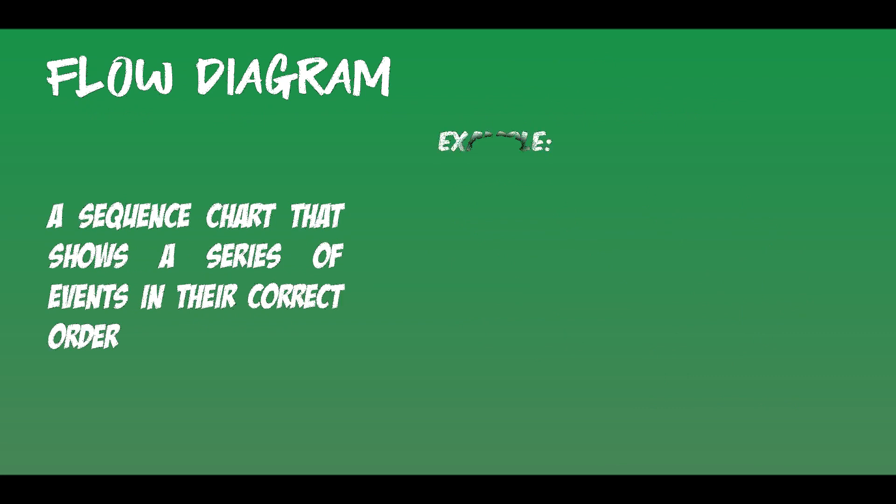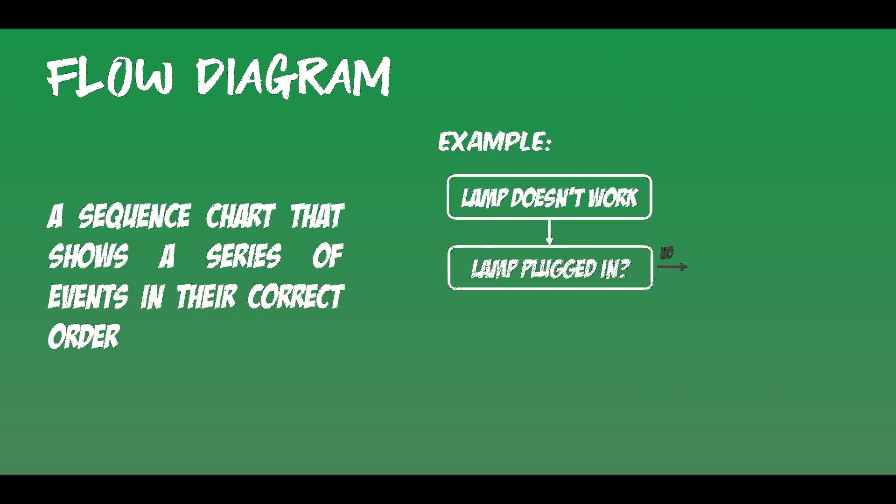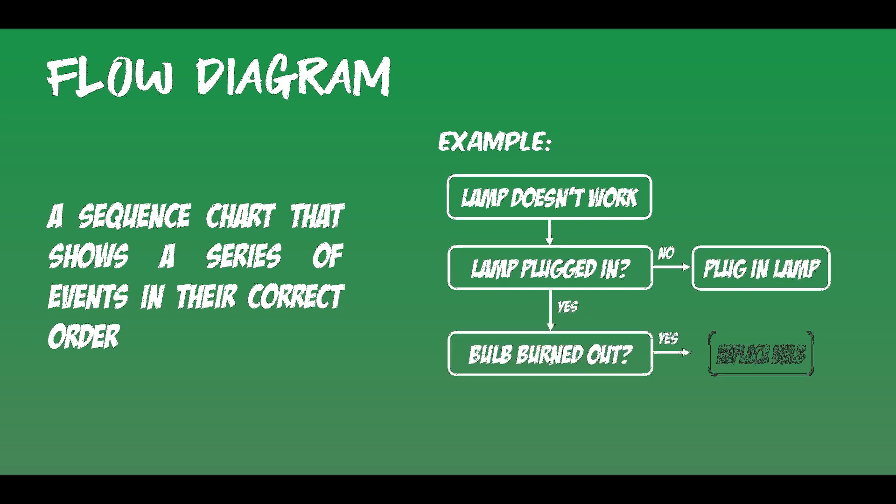Flow diagram is a sequence chart that shows a series of events in their correct order. If you have a concept that has steps or has certain order or sequence, then it could be shown in this kind of textual aid organizer.